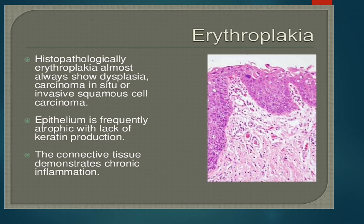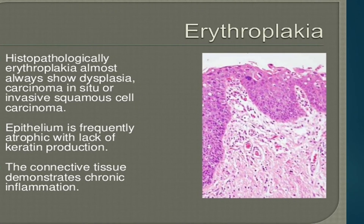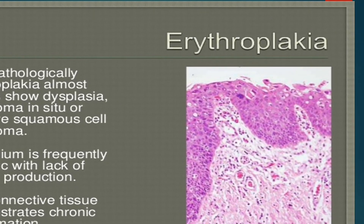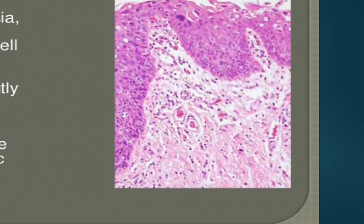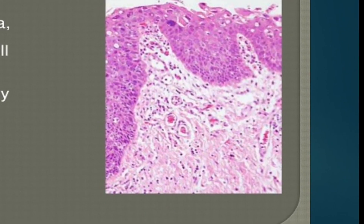Histopathologically, erythroplasia is always associated with dysplasia. The cells undergo dysplasia, or it shows features of carcinoma in situ where the entire epithelium undergoes dysplasia, or it shows features of invasive squamous cell carcinoma. The epithelium is frequently atrophic with lack of keratin production. The connective tissue shows chronic inflammation with infiltration of chronic inflammatory cells such as lymphocytes and plasma cells.